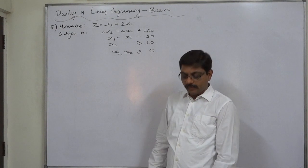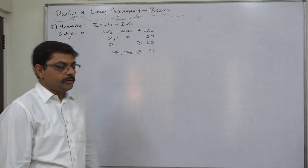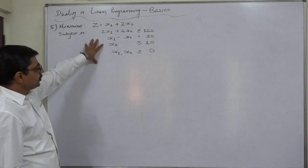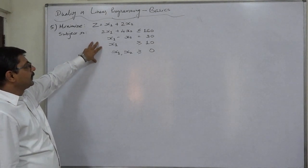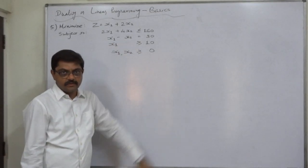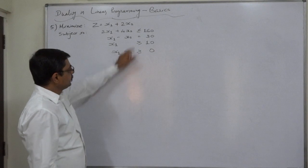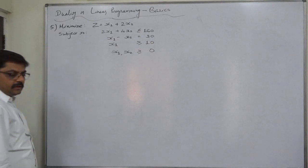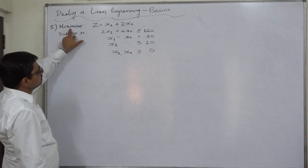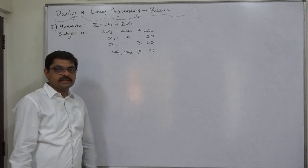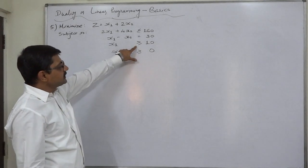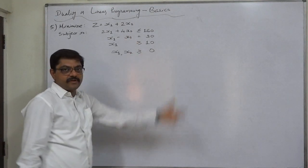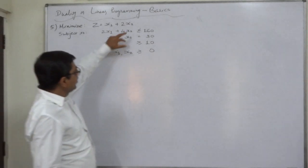Hello friends, welcome. We are going to take a new case of duality. The speciality of this case is that this is a linear programming problem having mixed constraints. The sign of the first constraint is less than or equal to, the second is equality, and the third is greater than or equal to. Our objective is minimization, and for minimization all constraints should be greater than or equal to, so we have to change the sign of two constraints.